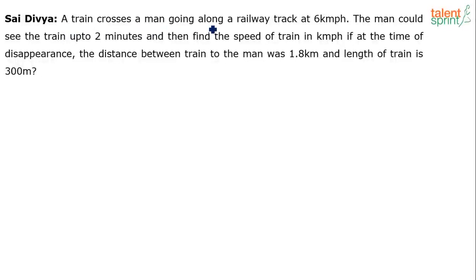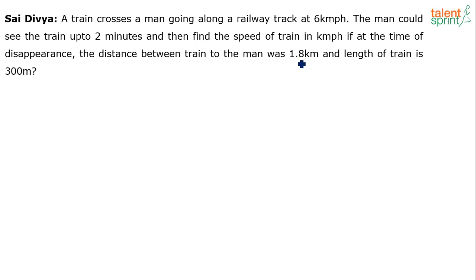A train crosses a man going along a railway track at 6 kilometers per hour. The man could see the train up to 2 minutes. Find the speed of the train in kilometers per hour if, at the time of disappearance, the distance between the train and the man was 1.8 kilometers and the length of the train is 300 meters.